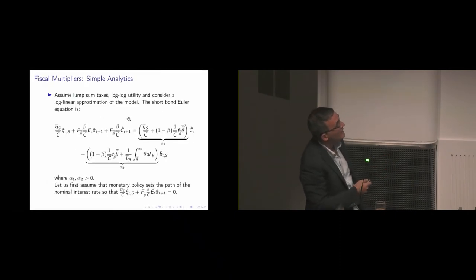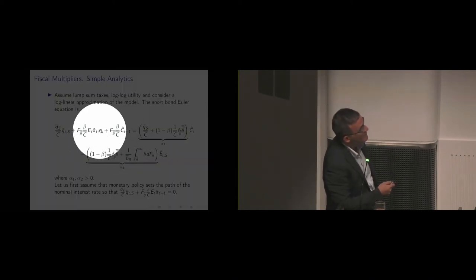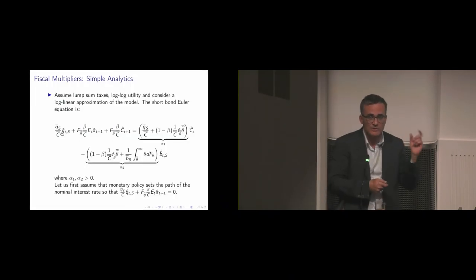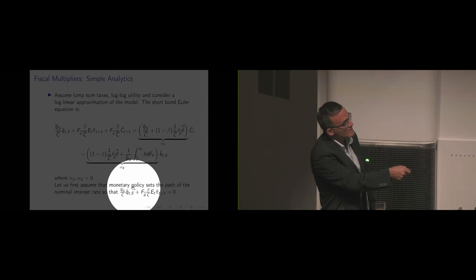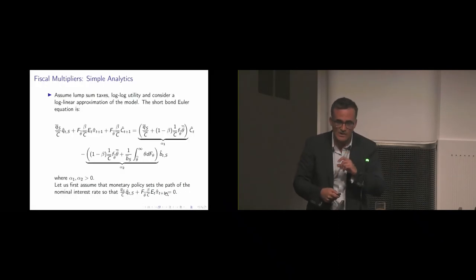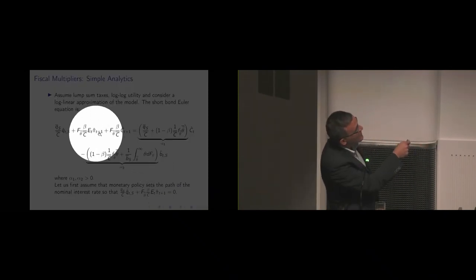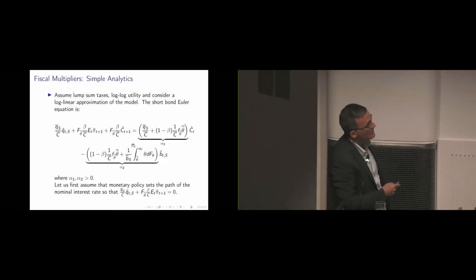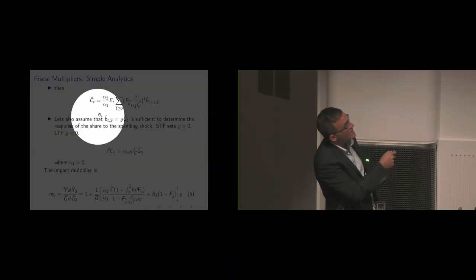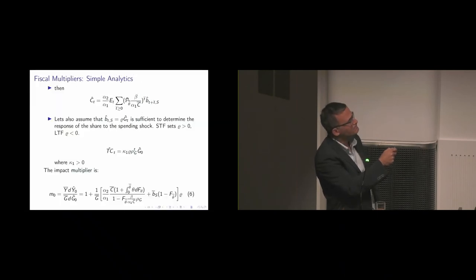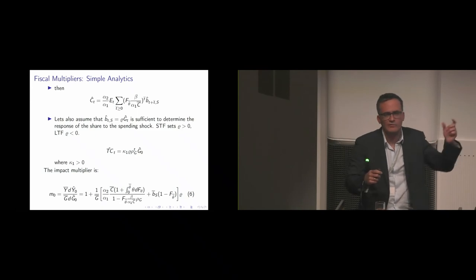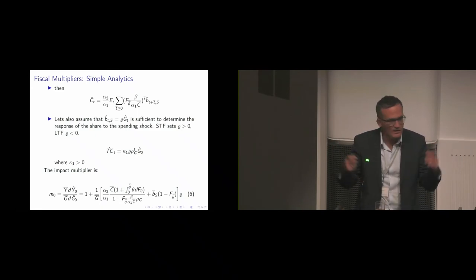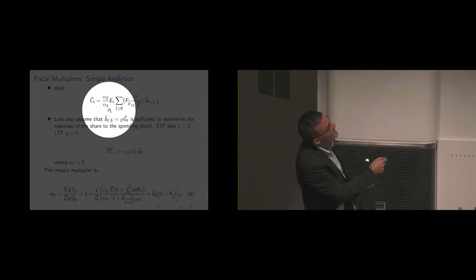The rest of the model is standard. There's a New Keynesian Phillips curve, a resource constraint, a specification for monetary and fiscal policy through ad hoc rules. What's worthwhile is looking at this first equation which prices the short-term asset. You can log-linearize this. If monetary policy sets the nominal interest rate so that this holds, then you have a first-order difference equation for consumption.